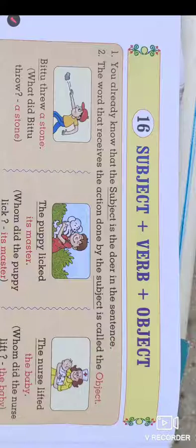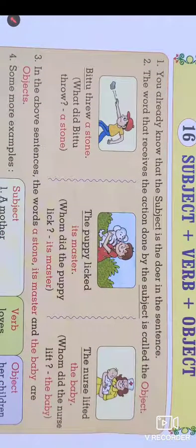The word that receives the action done by the subject is called the object. So we come to know the subject first — it is the doer. In the second line we have the definition of object — the meaning of object. Let us look with the help of pictures. There are good pictures about subject, verb, and object. A person is throwing a stone.